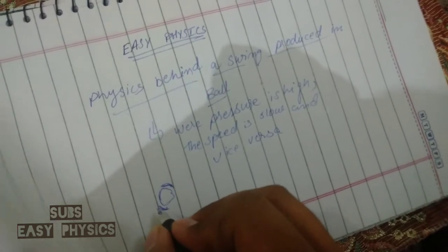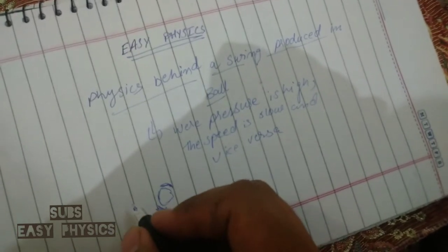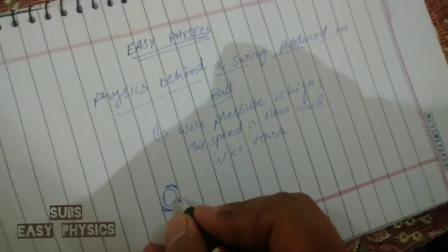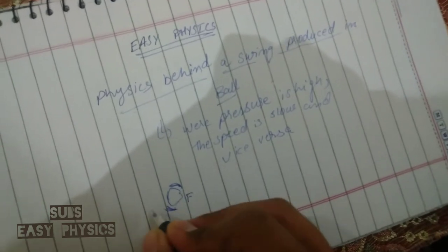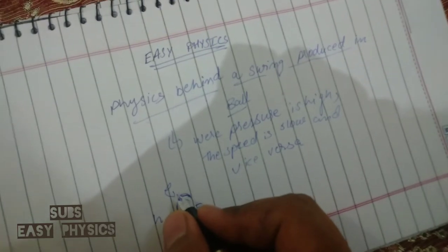On the rough side of the ball the speed is lower while the pressure is higher. So a force will act from high pressure to low pressure and a swing is produced in the ball.